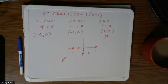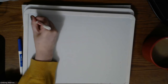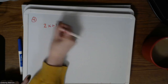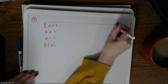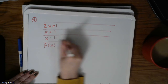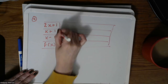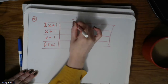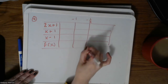For step four, we set up the sign chart with our three factors: (2x plus 1), (x plus 1), (x minus 1), and then the full function. Our zeros are negative 1, negative one half, and positive 1. Leave space, put in negative 1 and drop a vertical, then negative one half and a vertical, then positive 1.